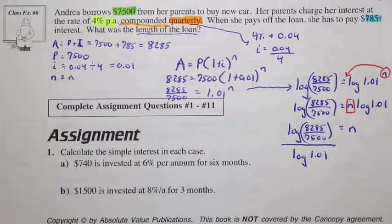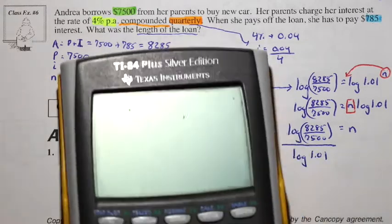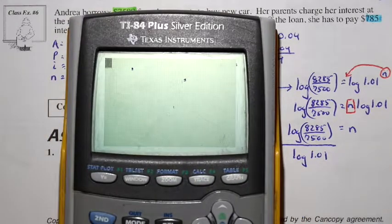When we find this out, we put this into our calculator. This is quite complicated. Let's see what we can try. Here we have, opening the brackets for the whole top, we have log of 8,285 divided by 7,500.